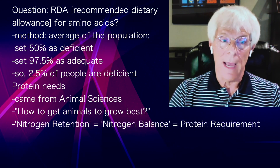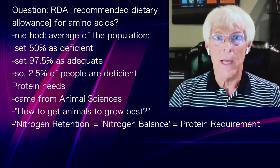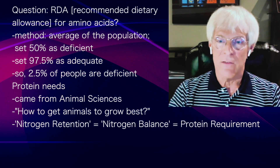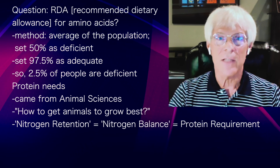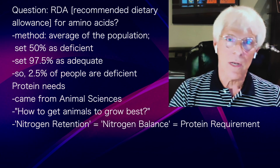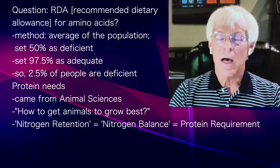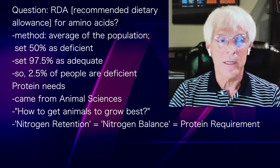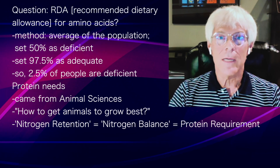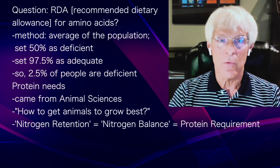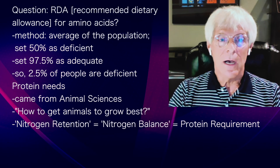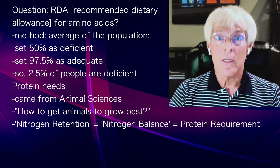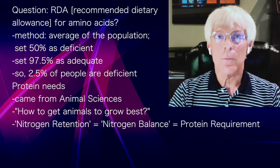Farmers were trying to figure out how to get animals to grow best using different kinds of proteins, and they developed protein quality scores — how much growth did they get for what they fed? How much nitrogen was deposited for how much was fed? These were all rapidly growing animals, and from that we developed the concept of nitrogen retention, which we've now translated into what's called nitrogen balance. That's how we determine the protein requirement.